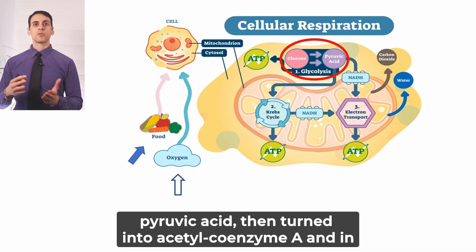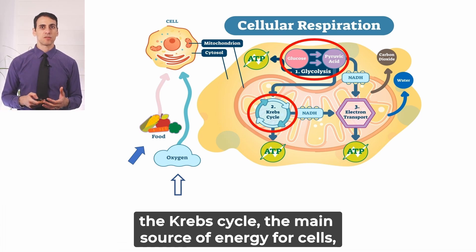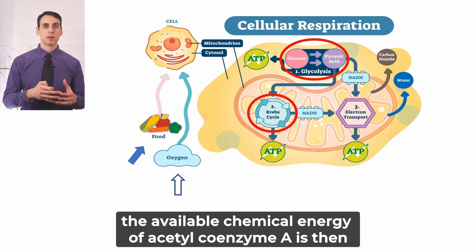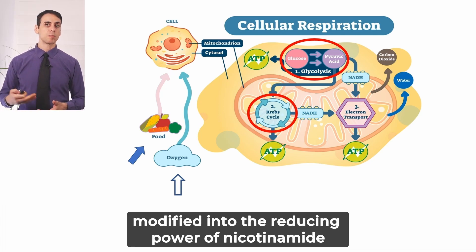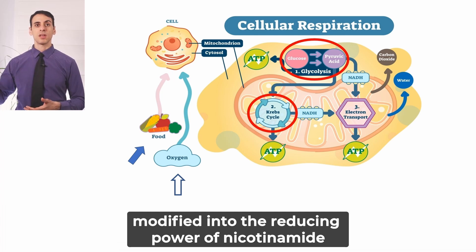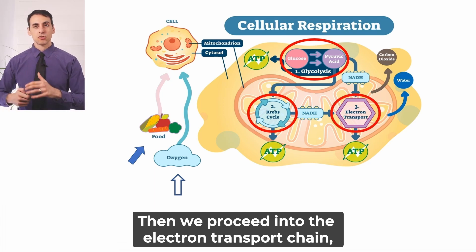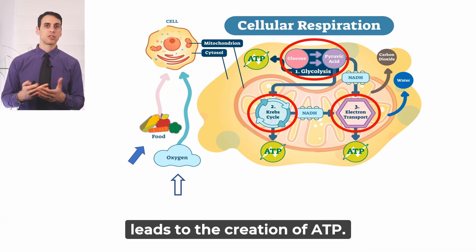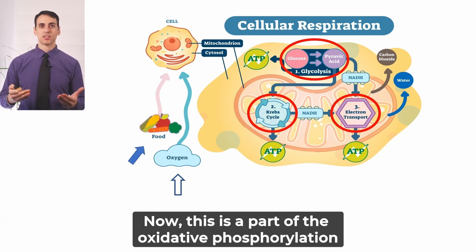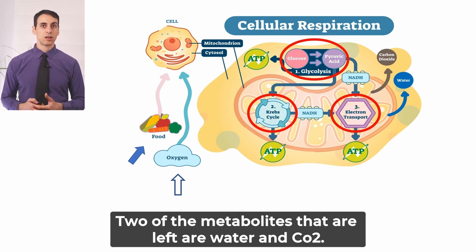Pyruvate is then turned into acetyl coenzyme A, and in the Krebs cycle — the main source of energy for cells — the available chemical energy of acetyl coenzyme A is modified into the reducing power of nicotinamide adenine dinucleotide, which is NADH. Then we proceed into the electron transfer chain, which creates an electrochemical gradient that leads to the creation of ATP. This is part of the oxidative phosphorylation process.